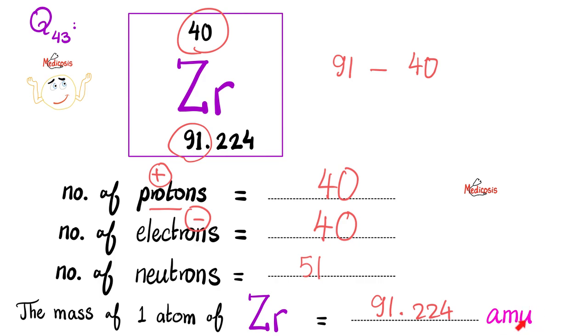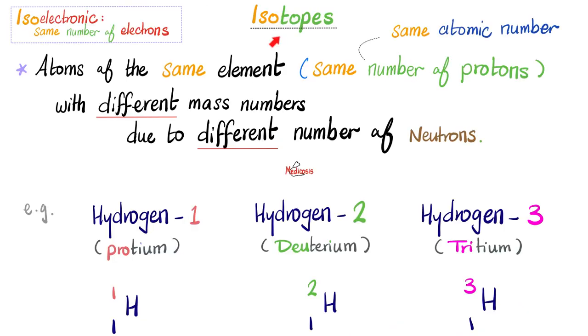The atomic mass unit is a unit that measures the mass of an atom. Think of it as a gram, but way, way, way smaller than one gram — because this is for one atom.